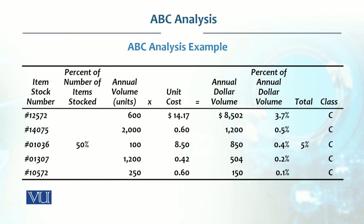C-type items are very high in quantity — 50 percent of the total inventory units. But the total annual value is only 5 percent. That means items like nuts and bolts are operationally present but not critical value-wise.